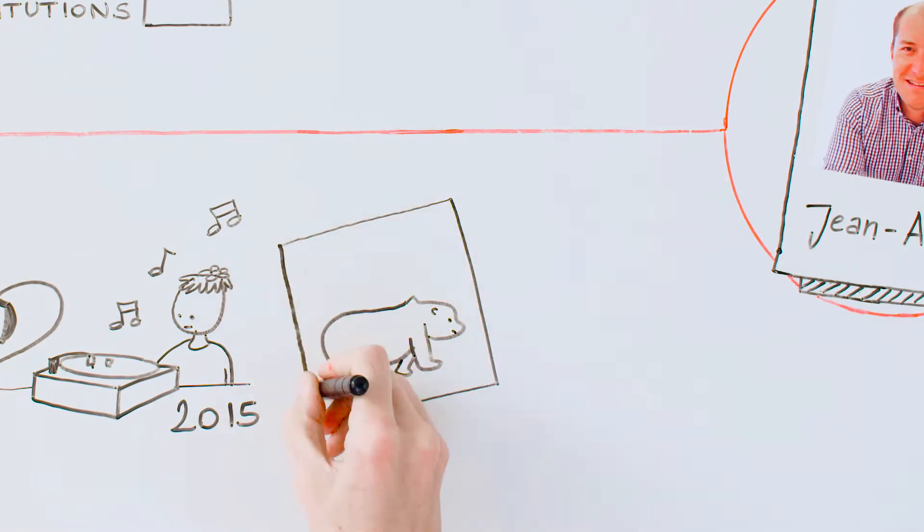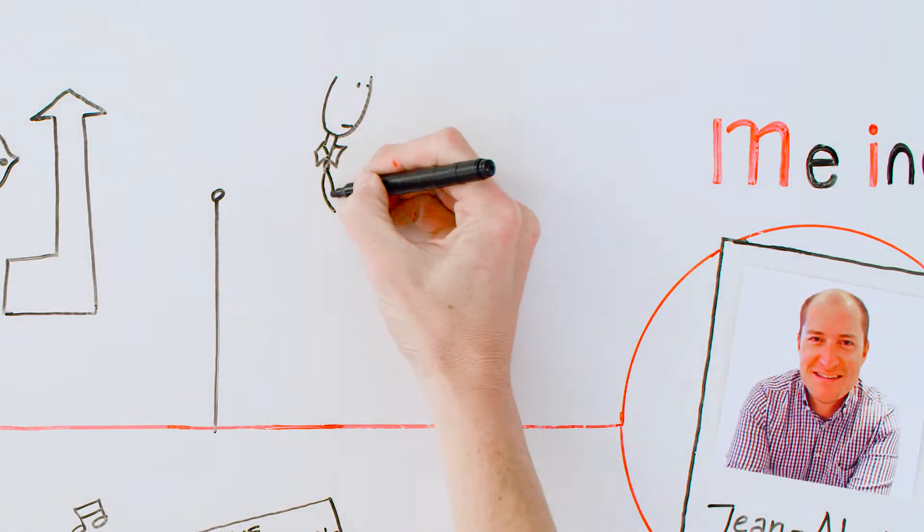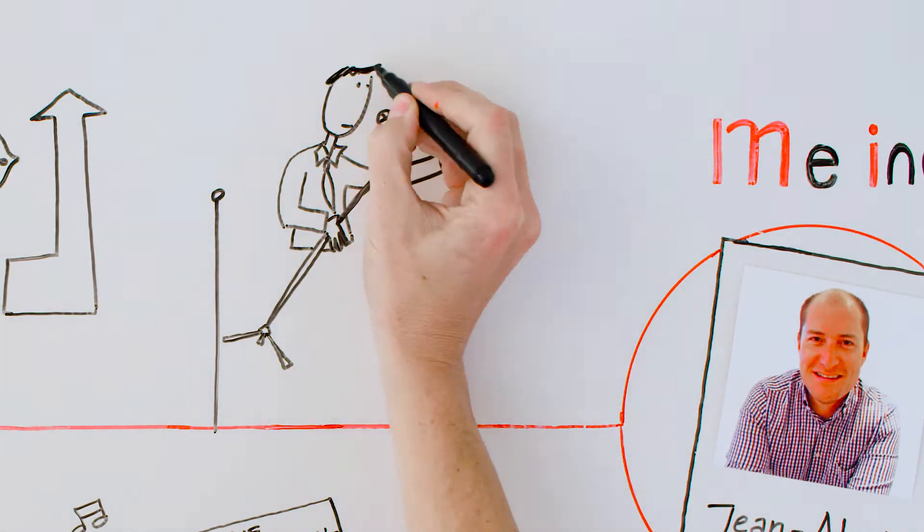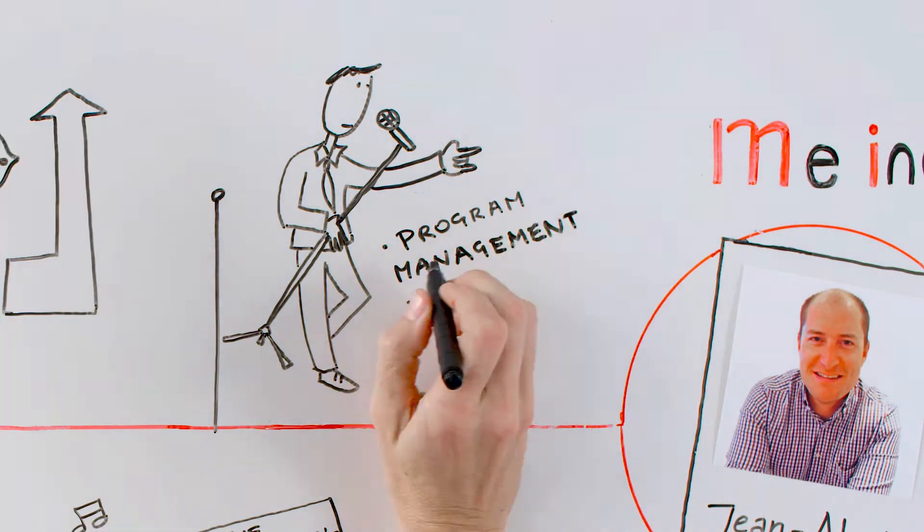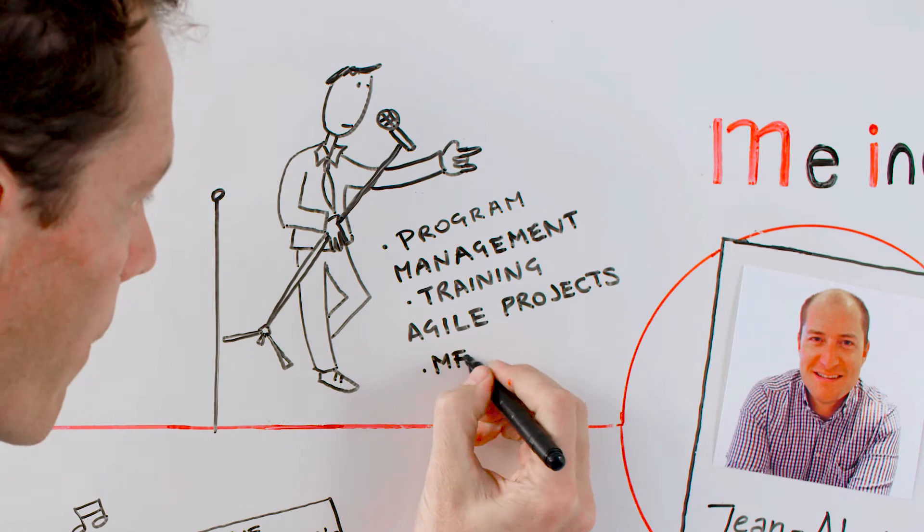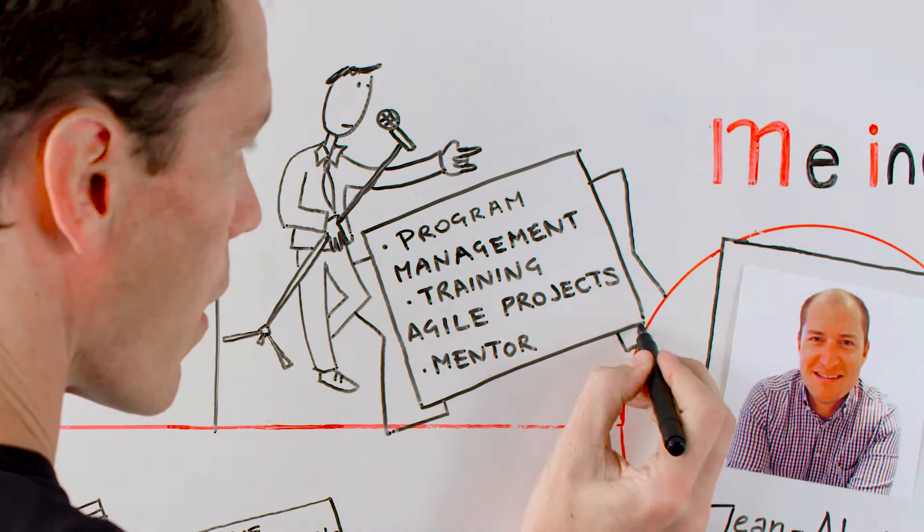That same year, he released his first album with his band. Jean-Alexis also kept on rocking at TriFinance, with a project in the program management team of a major bank, trainings on agile projects and change management, and as a mentor for younger colleagues.